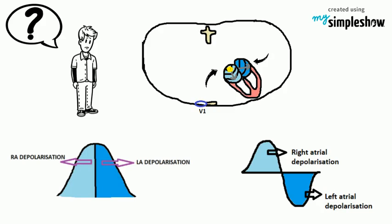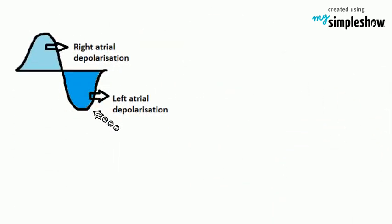The first positive part occurs due to spread of depolarization in the same direction as V1. While spreading the electrical stimulation to the left atrium, it is away from V1, so there is a negative wave.